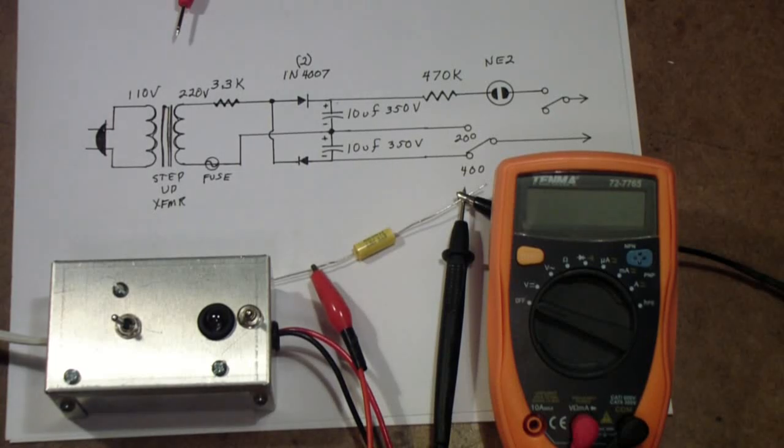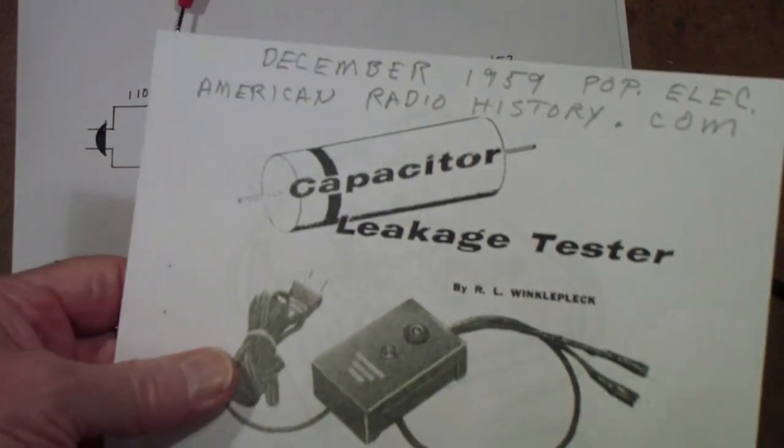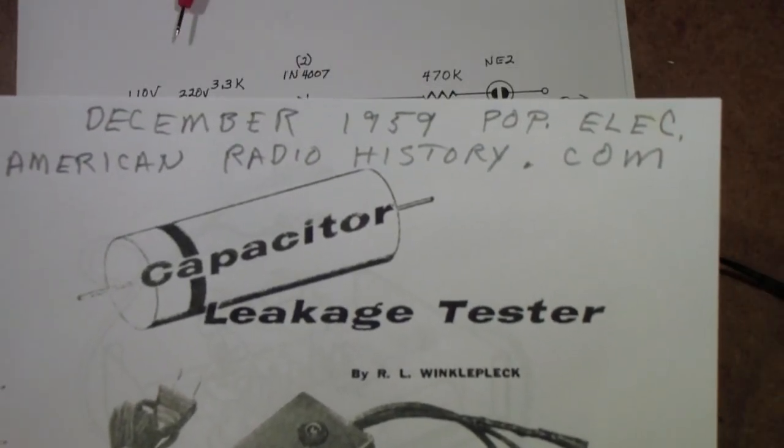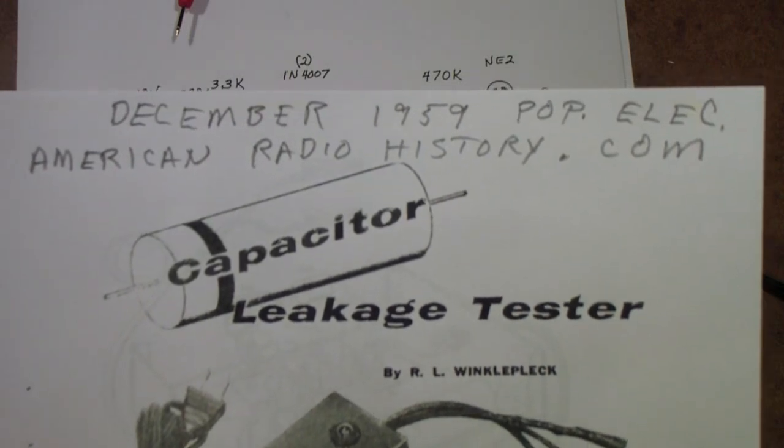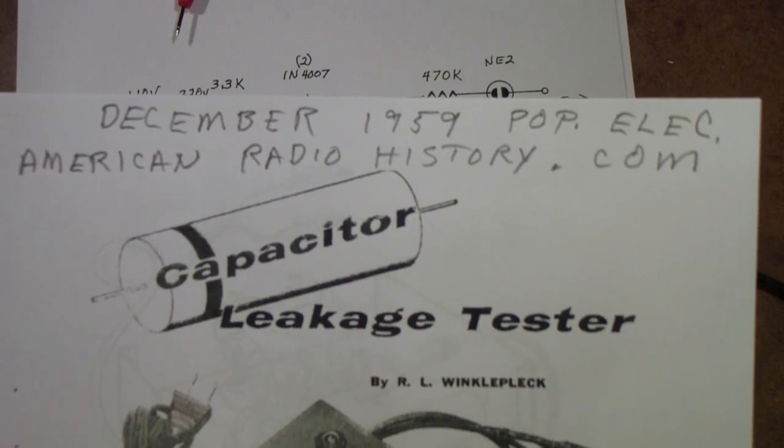I'm revisiting a project that I originally built when I was doing the restoration of the Halicrafters SX62A. I built this capacitor leakage tester from an article in Popular Electronics. The original article appeared in the December 1959 issue of Popular Electronics, which I have downloaded from AmericanRadioHistory.com.